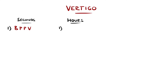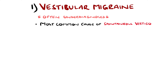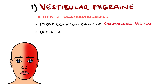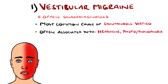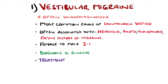Vertigo lasting several hours is most commonly a vestibular migraine, an often overlooked diagnosis despite being the most common cause of spontaneous vertigo. These can occur with or without associated headache but may also feature photo- and phonophobia, meaning an aversion to light and sound respectively. Often there is a family history of migraine and it is three times commoner in females than in males. Diagnosis is clinical and treatment involves lifestyle changes addressing the most common triggers of stress, poor sleep, dehydration and hormonal changes, for example menstruation.